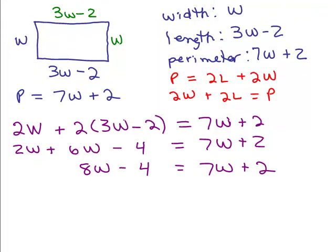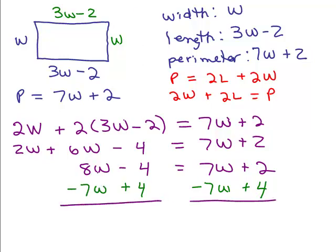We want to solve for W. So I'm going to put the variables on the left and the constants on the right. So I'm going to add 4 to both sides and also subtract 7W. And that gives me, well, 8W minus 7W is W, sweet, W is 6.